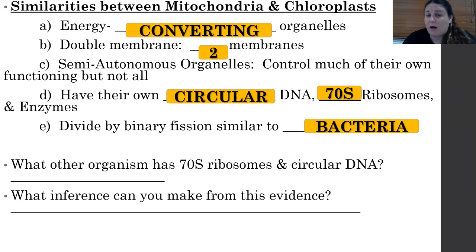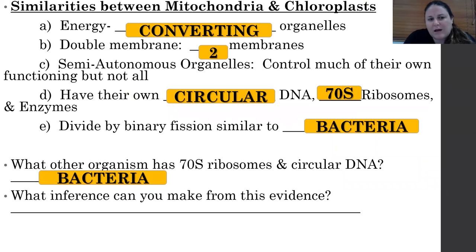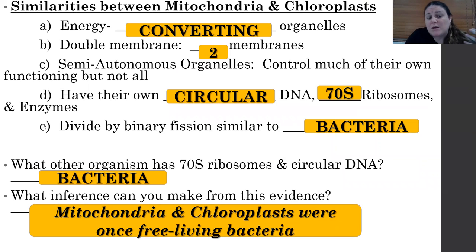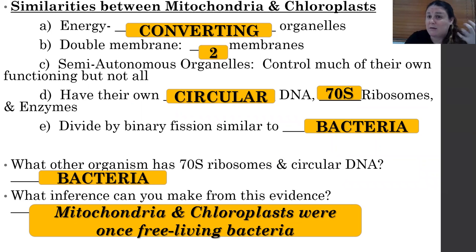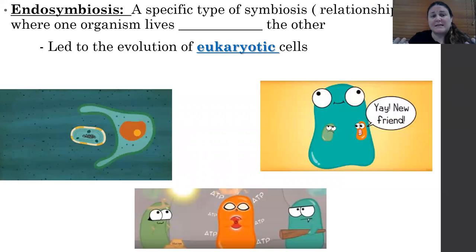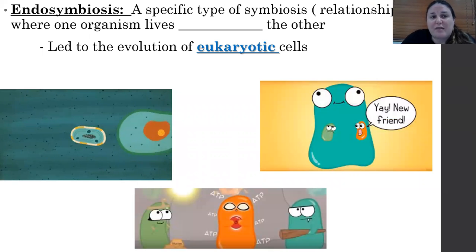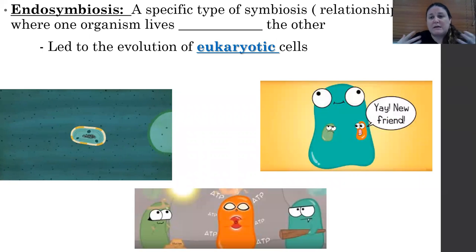The way mitochondria and chloroplasts divide is through a process called binary fission, which is very similar to how bacteria divide. If you think about what other organisms have 70S ribosomes and circular DNA — that would be bacteria. So we can infer that mitochondria and chloroplasts were once free-living bacteria. Scientists think they are descendants from ancestral prokaryotes based on the evidence: DNA like bacteria, ribosomes like bacteria, and they divide like bacteria.